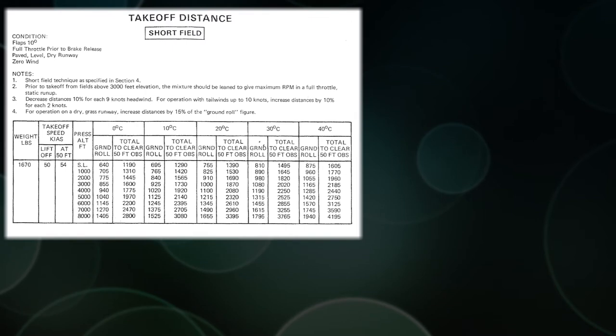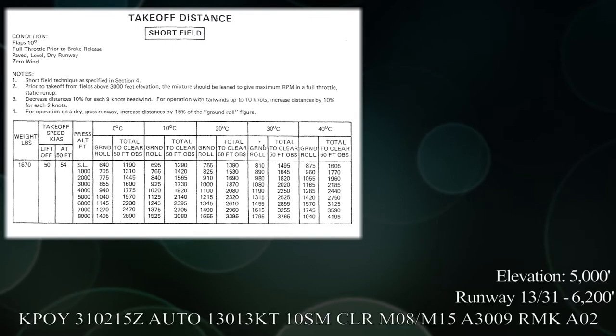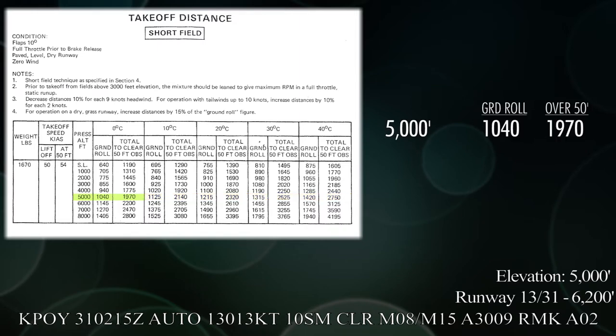Alrighty then, let's actually look at this little chart. So we know our elevation is 5,000 and if we look, our temperature is minus 8. Our chart only goes down to zero degrees and since we don't have anything negative, we'll just use zero. This will be a quick example so we won't do the pressure altitude conversion thing, but we'll just look at the ground roll of 1,040 and the total to clear a 50 foot obstacle of 1,970.